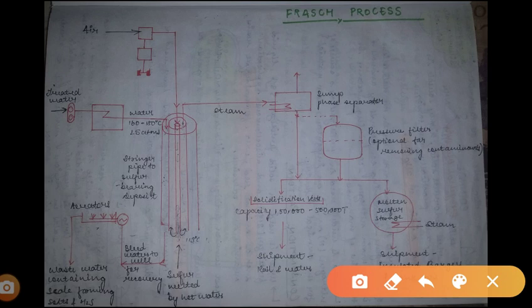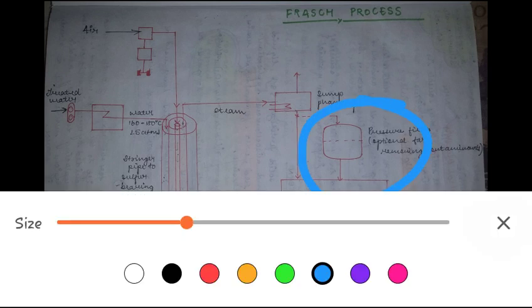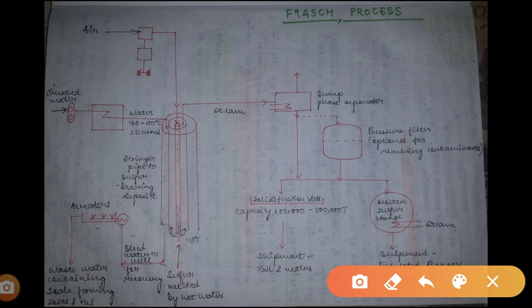So this is how we extract sulfur and we ship it. But one most important thing: if we want to get rid of contaminants which molten sulfur might have caught, we have a pressure filter over here. This pressure filter removes any contaminants which are present in the molten sulfur.